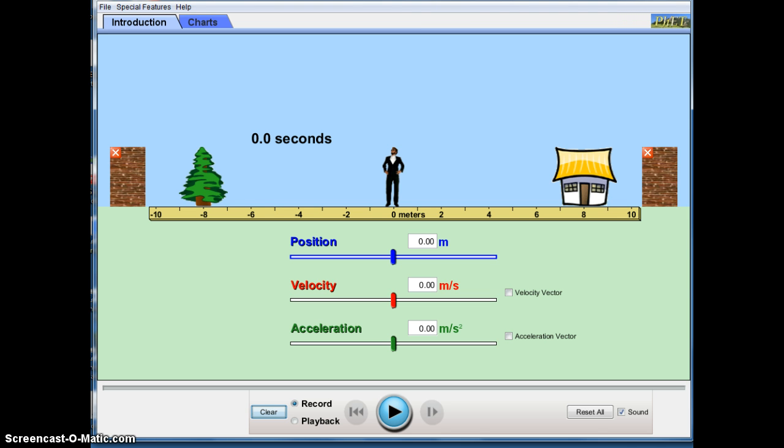So let's familiarize ourselves with this computer simulation. We have three different sliders here: position of the man, either to the tree or to the house, the velocity of the man, and the acceleration.